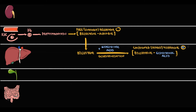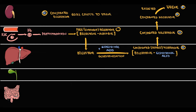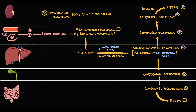Hepatocytes excrete a minor portion of conjugated bilirubin into the blood. Through the bloodstream, bilirubin is delivered to the kidneys, and kidneys excrete conjugated bilirubin into the urine — conjugated bilirubin gives color to the urine. Most of conjugated bilirubin hepatocytes excrete into the bile; with bile, conjugated bilirubin is delivered to the duodenum, and then the intestine excretes conjugated bilirubin with feces.